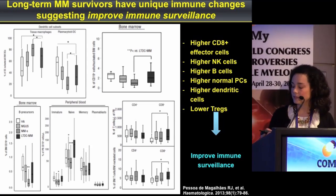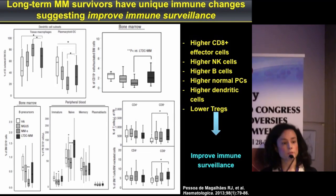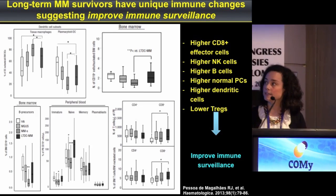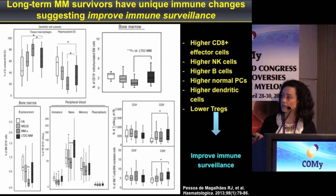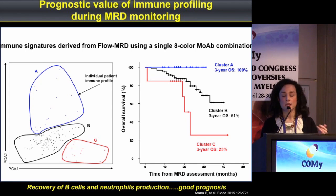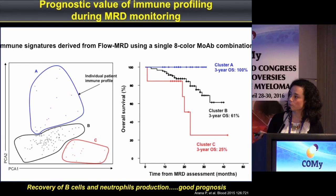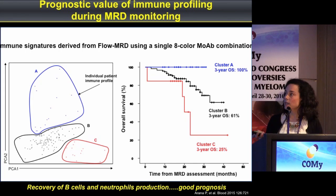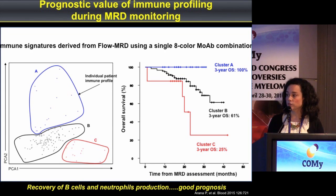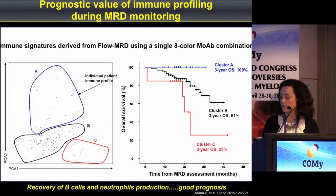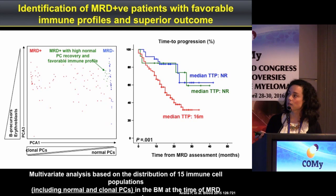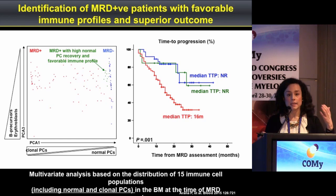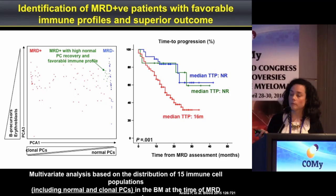Another model I would like to share is the importance of immune system status in long-term multiple myeloma survivors — patients that survive more than 10 years free from disease. These patients have a unique immune profile with higher numbers of effector cells and lower numbers of T-regulatory cells, suggesting improved immune surveillance. Furthermore, using eight-color flow cytometry for assessing MRD, we can distinguish three groups of patients based on different immune profiles with different outcomes. Patients with better recovery of the B cell compartment and better neutrophil production have the best outcome, and MRD-positive patients with this unique immune profile have similar outcomes to MRD-negative patients.